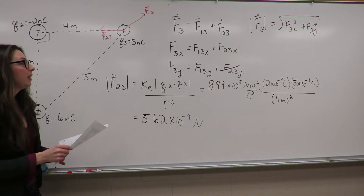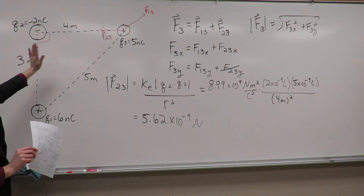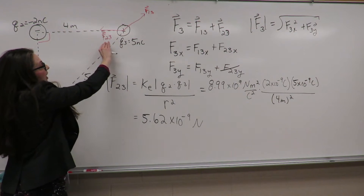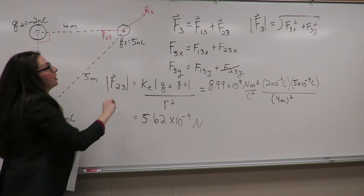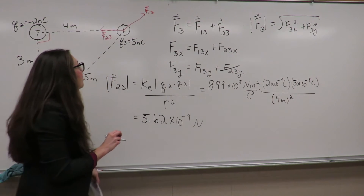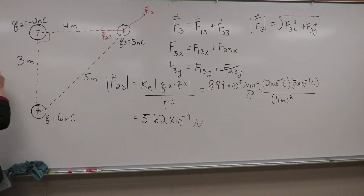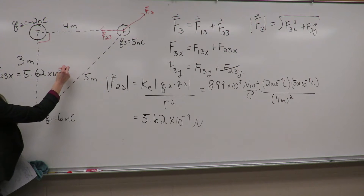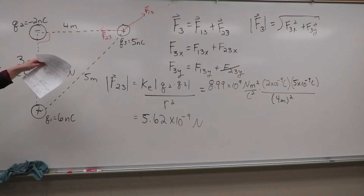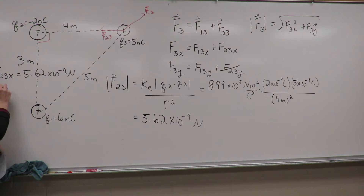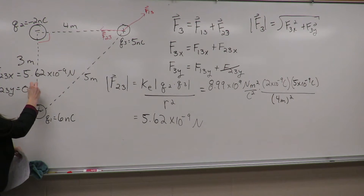That's the magnitude of F23. Since F23 only has an x component and that vector points in the negative x direction, F23x = −5.62×10⁻⁹ N. And F23y = 0 N.